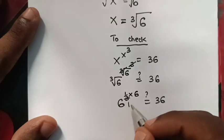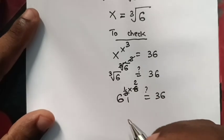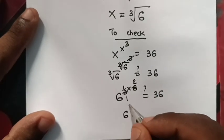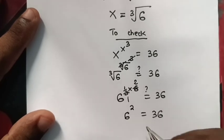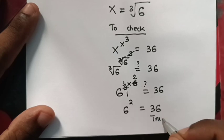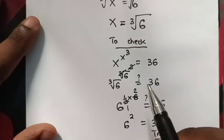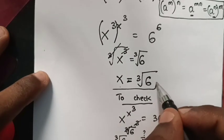To simplify, it will be 6^2 which equals 36. So it's true for the value of x which is ∛6.